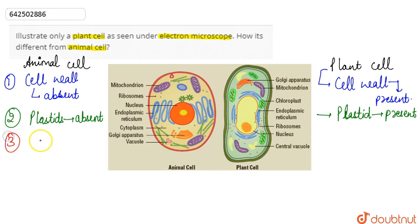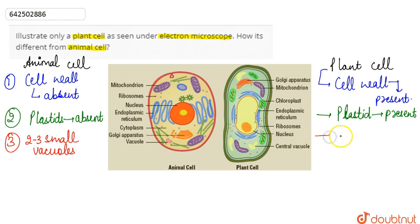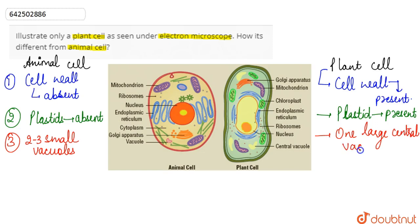The next point of difference is that animal cells have some two to three small vacuoles. Whereas in case of the plant cell, there is one large central vacuole present.